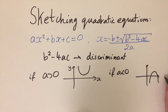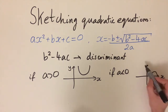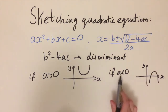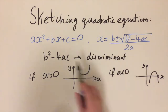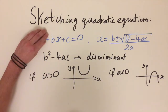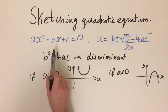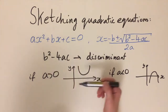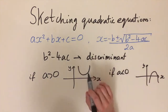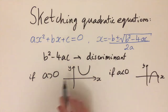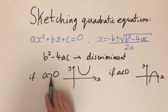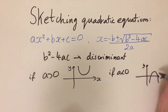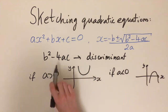When a is negative, the ends go to negative infinity. If a equals zero, the quadratic term vanishes and we just get a linear equation — a straight line. So: a positive means the parabola goes upwards, a negative means it goes downwards.